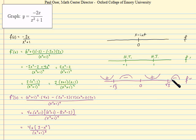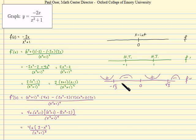With the sign analysis complete, we can say with certainty whether these three points are points of inflection. The concavity changed going from the left to the right of negative square root of 3, so that is indeed a point of inflection. The other two points follow suit — the second derivative also changes sign at 0 and at positive square root of 3, going negative to positive and positive to negative respectively.